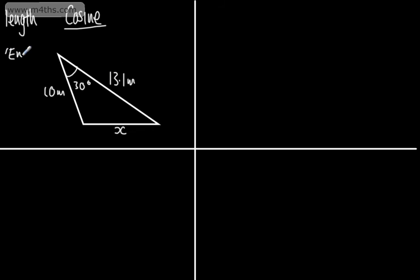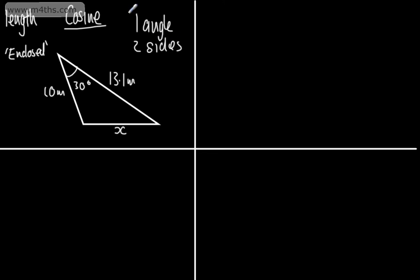To use the cosine rule to find a missing length, we will be given one known angle and two known sides. This will allow us to find the missing side. The 30 degrees is enclosed, and we have one known angle and two known sides — this is when we use the cosine rule.